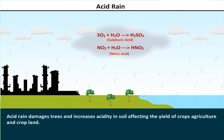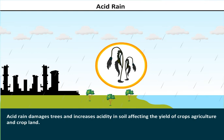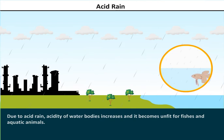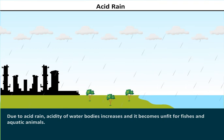Acid rain damages trees and increases acidity in soil, affecting the yield of crops, agriculture, and cropland. Due to acid rain, the acidity of water bodies increases and it becomes unfit for fishes and aquatic animals.